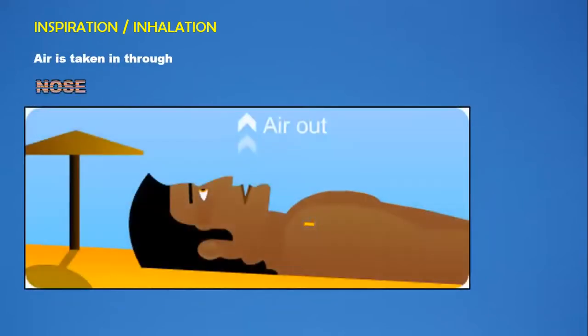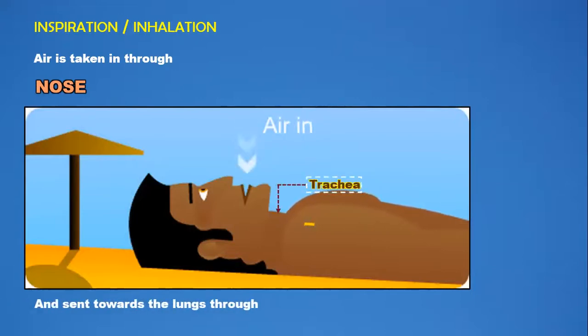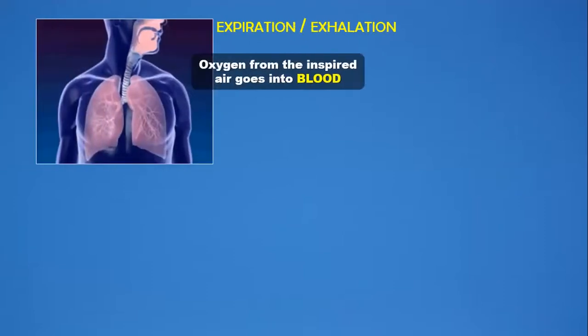In external respiration, the first step is inspiration or inhalation. Air is taken in through the nose. The air we breathe in goes through to the lungs and gets situated at the trachea. Next comes expiration or exhalation — oxygen from the inspired air goes into the blood.